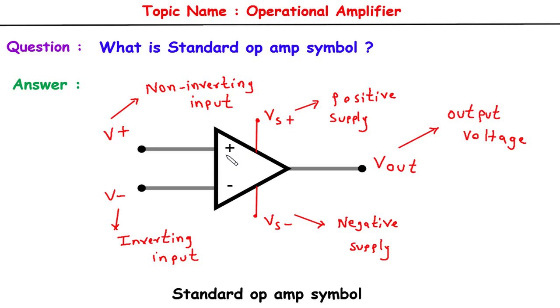On the contrary, the lower input terminal, located at the bottom of the triangle, signifies the inverting terminal or the negative input terminal. This terminal is commonly utilized to receive the feedback signal, which assists in controlling the behavior of the amplifier. The inverting terminal is connected to the negative supply voltage, denoted by a minus sign.